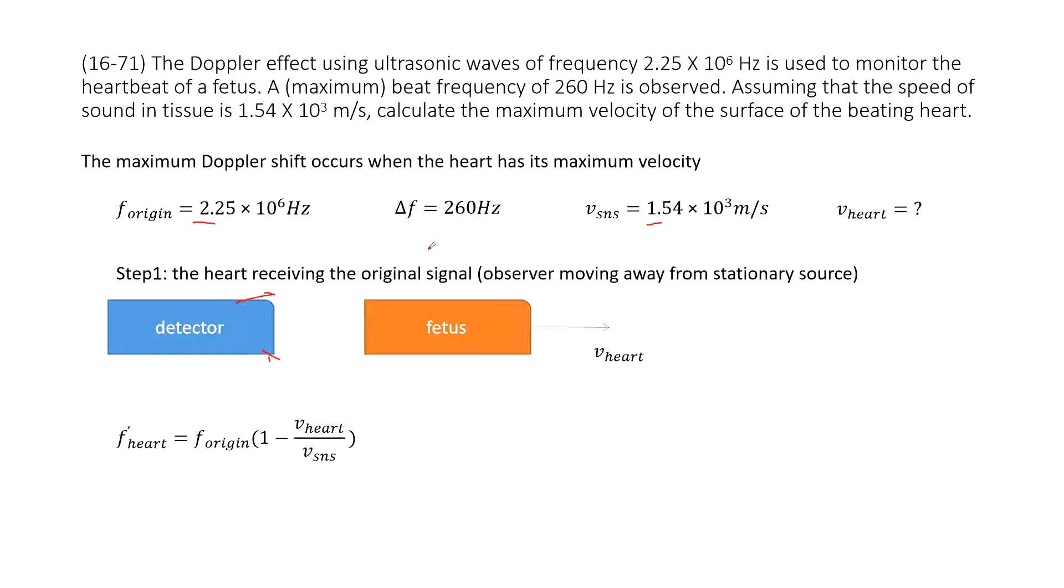Now we can see, we look at step 1. The heart received the origin signal. So we can see the heart is just moving this way, right? The detector is stationary, and this sound signal comes out to there. This is observer moving away from the stationary source. So we can get the frequency the fetus received - this one, F heart. Agree? Yes.